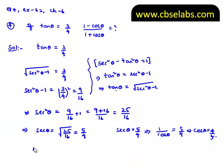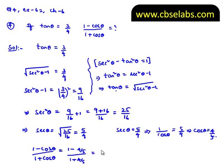Substituting cos θ equals 4 by 5 into the expression (1 minus cos θ) by (1 plus cos θ): we get (1 minus 4 by 5) divided by (1 plus 4 by 5). Taking LCM 5, the numerator becomes (5 minus 4) by 5 and the denominator becomes (5 plus 4) by 5. The 5s cancel, giving us 1 by 9. Therefore the solution is 1 by 9.